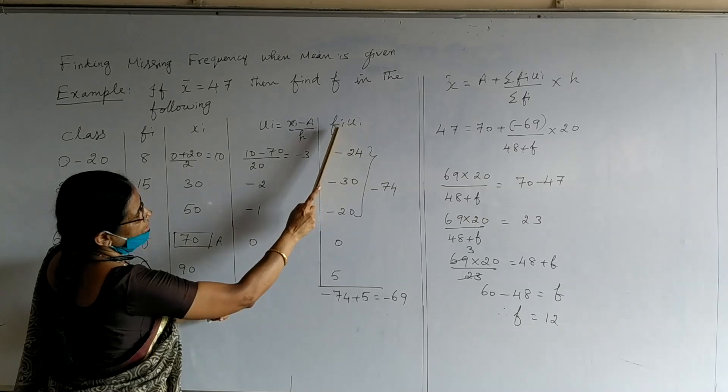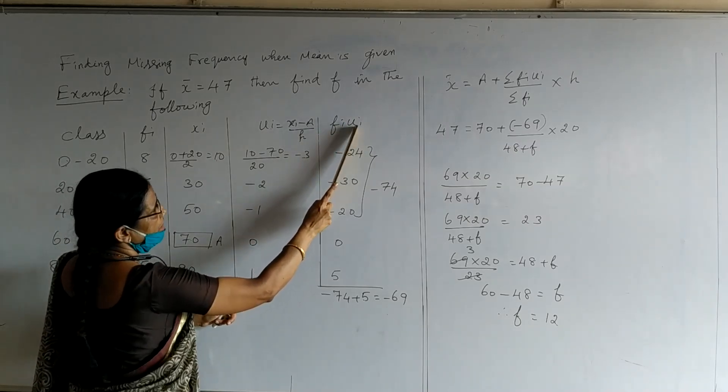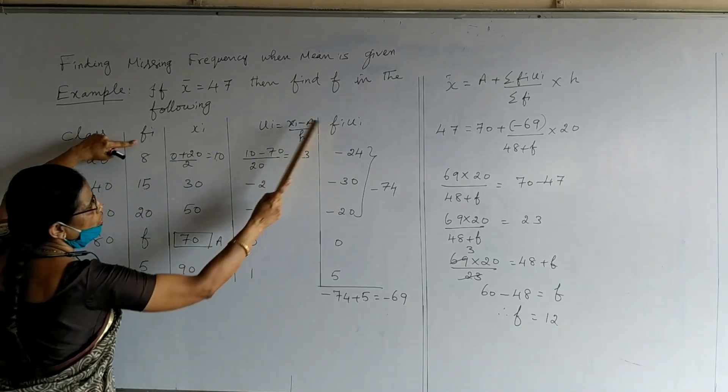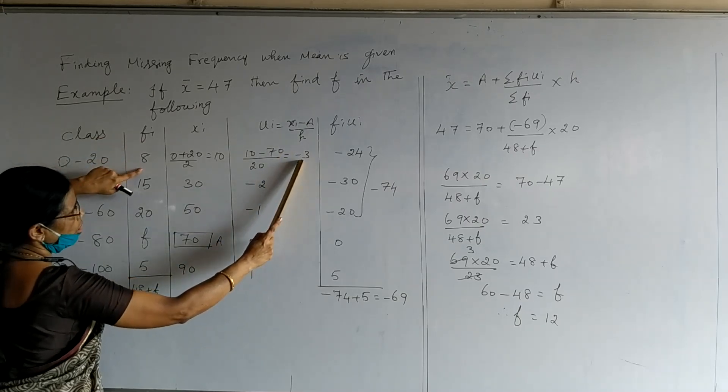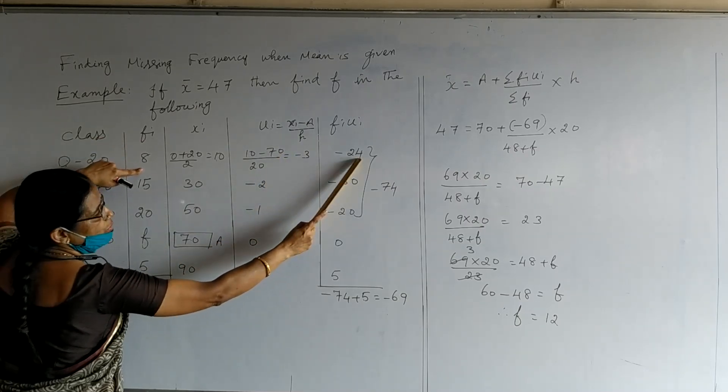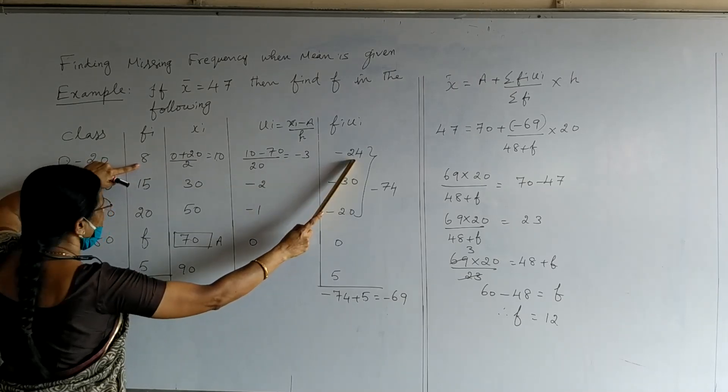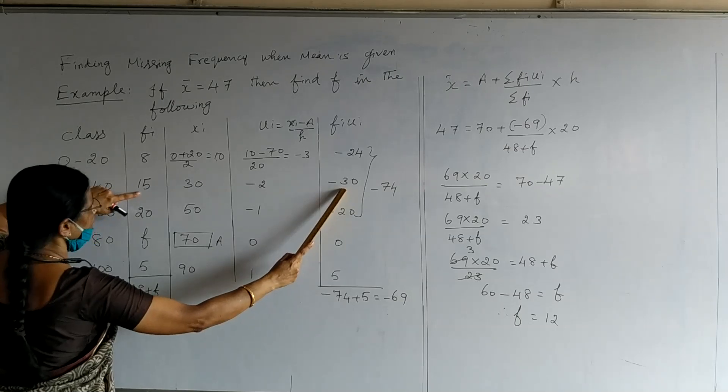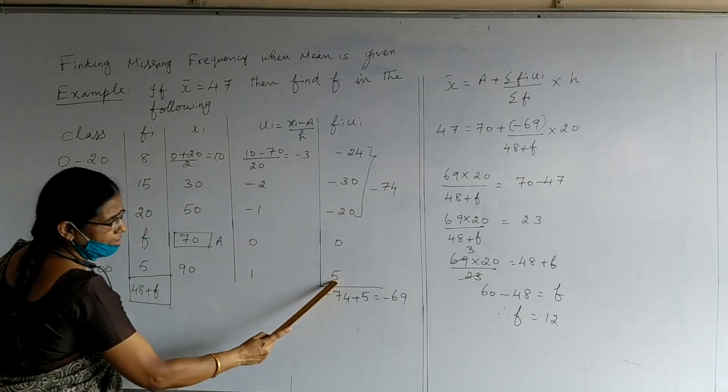The last column is fi ui. It is the product of fi and ui. We know fi is the second column and ui is the fourth column. So multiplying these two columns, we get entries for fi ui. So 8 into minus 3 gives minus 24, 15 into minus 2 gives minus 30. Similarly, we get minus 20, 0, and 5 respectively.